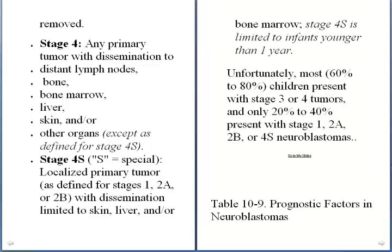Stage 4 involves proper dissemination. Any primary tumor that disseminates to distant lymph nodes, bone, bone marrow, liver, skin, or other organs is defined as stage 4. There is also a special type called stage 4s, in which the localized primary tumor, as defined for stages 1, 2a, and 2b, has dissemination limited to skin, liver, and/or bone marrow. Stage 4s is limited to infants younger than one year.